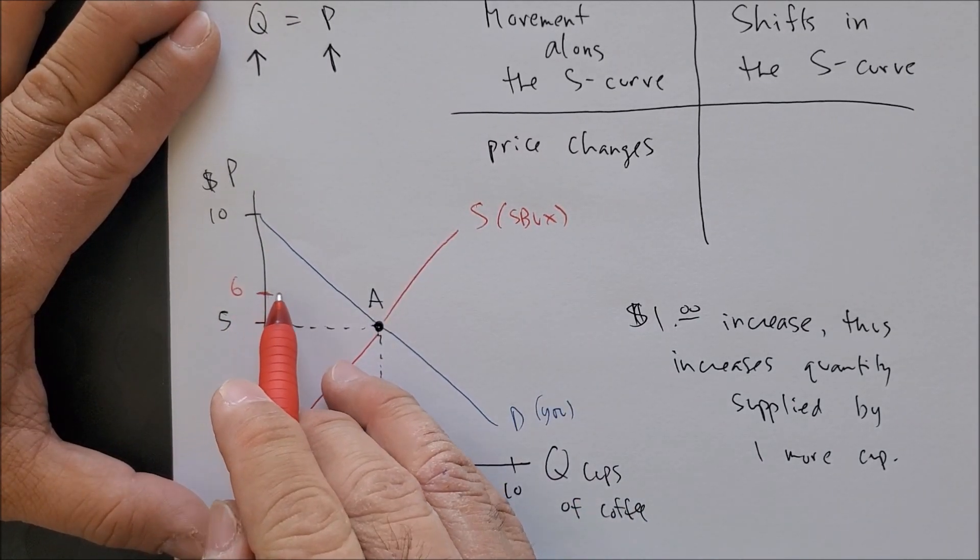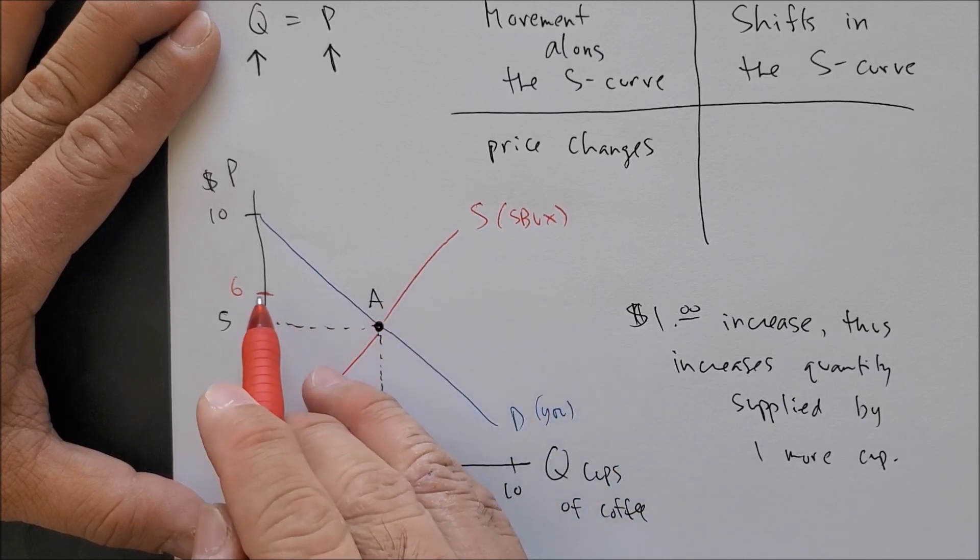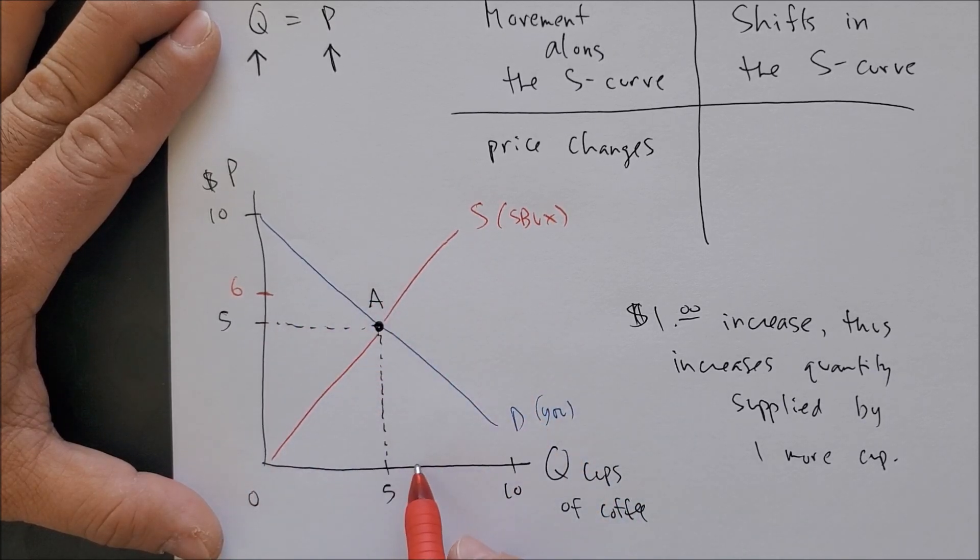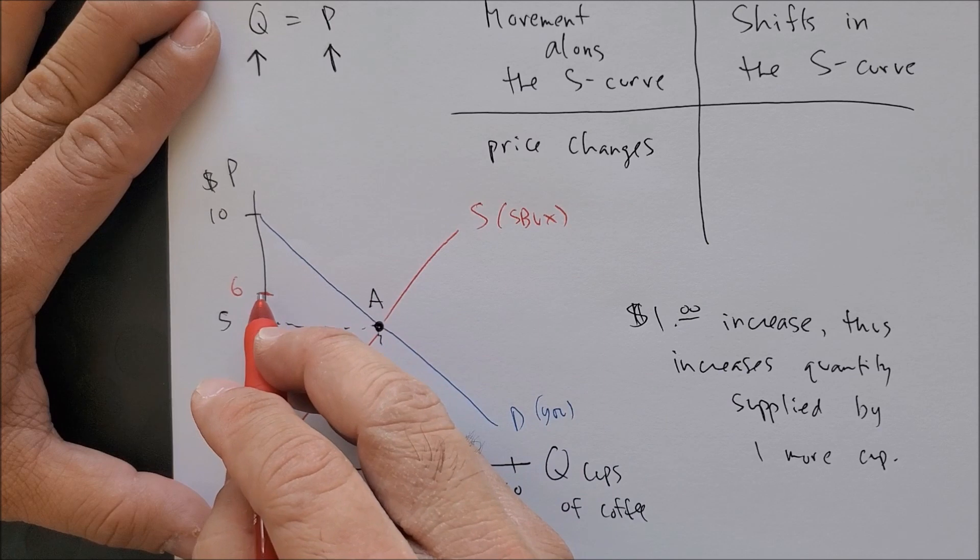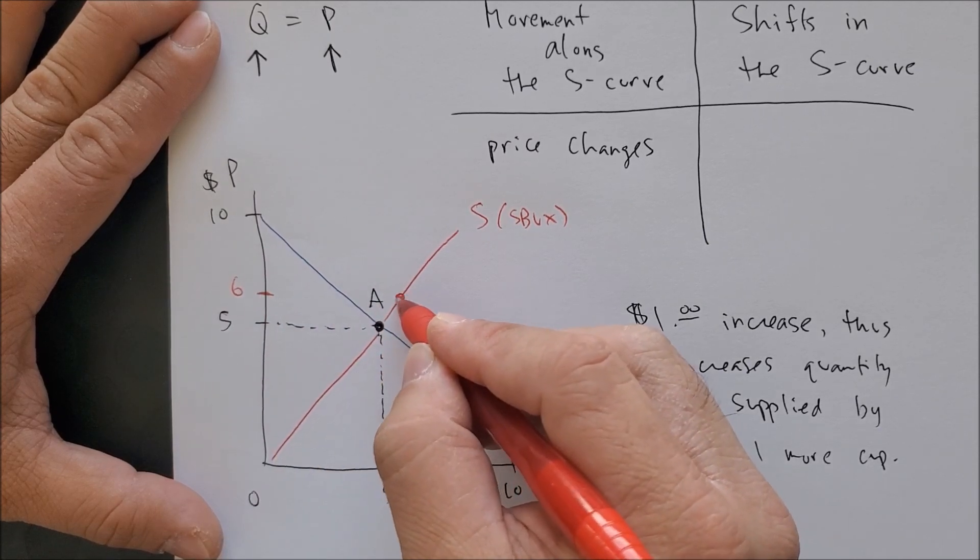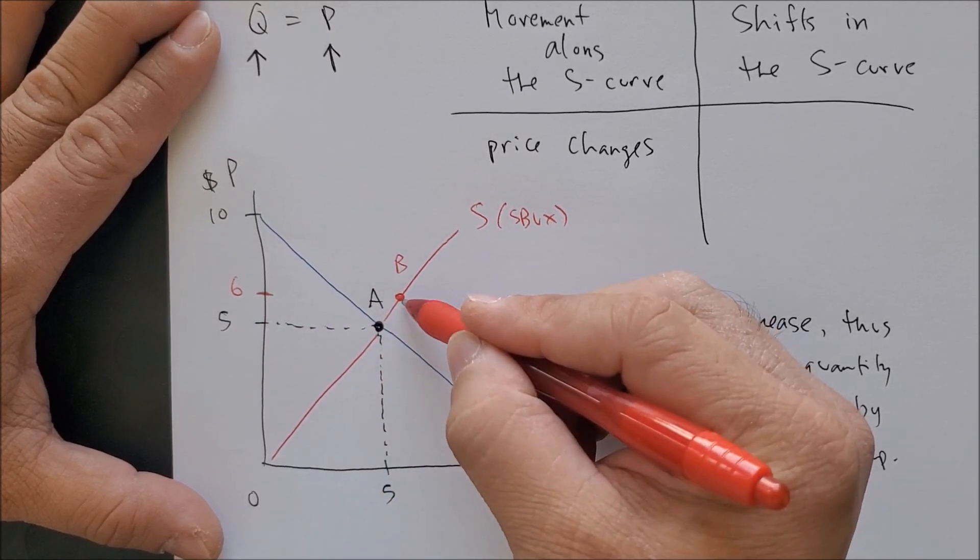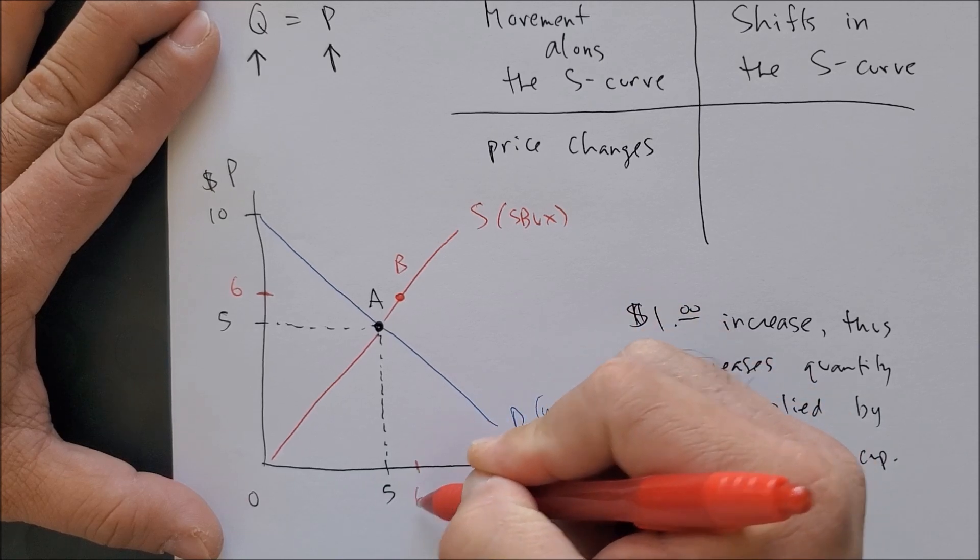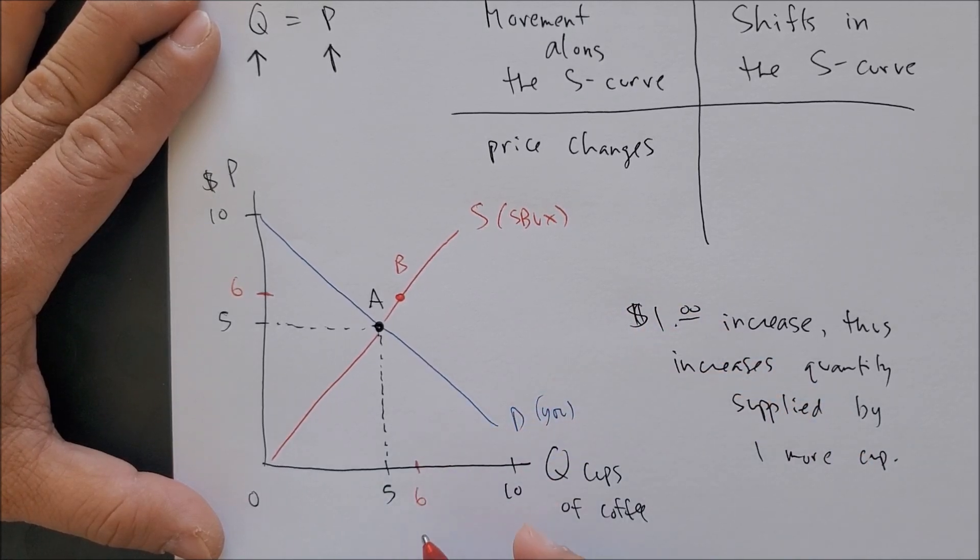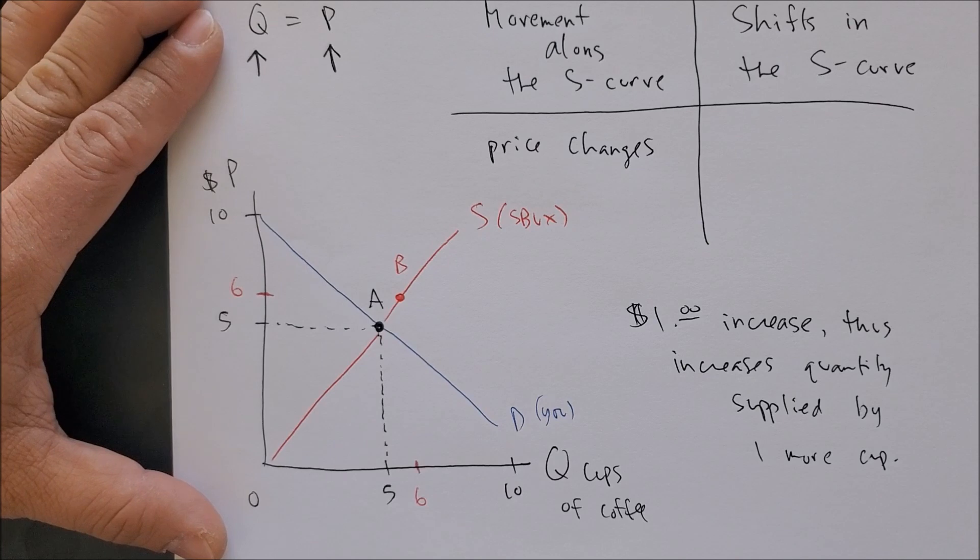At a higher price, Starbucks is willing to produce more coffee. At a higher price, point B, Starbucks will produce more coffee. So they're happy, able to produce more due to an increase in price.